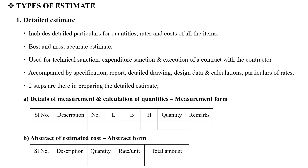This is the Detailed Estimate. In every square mark, the Detailed Estimate will be used. When you need the most accurate estimate, you can use a Detailed Estimate. This can be used by a Contractor, as well as for Technical Sanction, Efficiency, or Contract Execution.